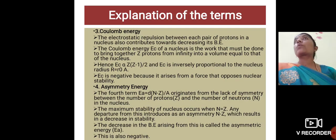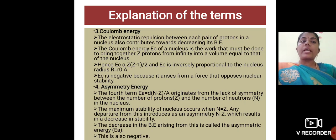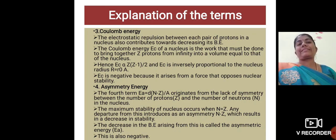The next one is coulomb energy. The coulomb energy arises because of the electrostatic repulsion between each pair of protons in a nucleus. It also contributes towards decreasing its binding energy because it is a negative quantity. The coulomb energy of the nucleus is the work that must be done to bring together Z protons from infinity into a volume equal to that of the nucleus. Here the EC is inversely proportional to the nuclear radius. This coulomb energy is also a negative quantity because it arises from a force that opposes nuclear stability.